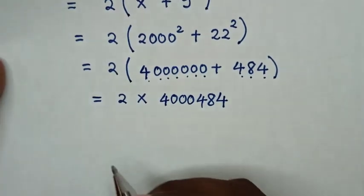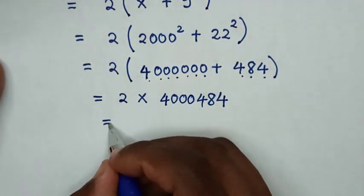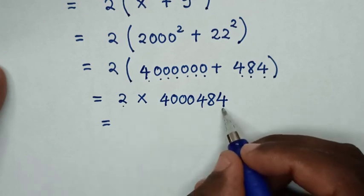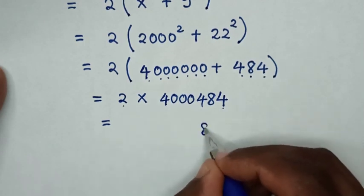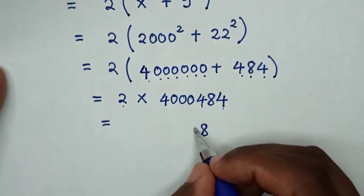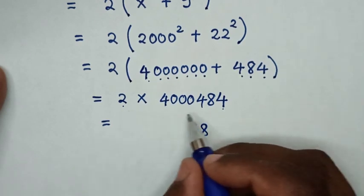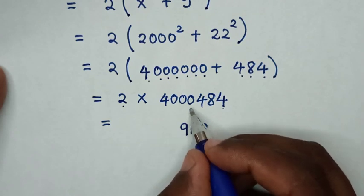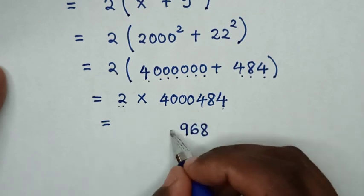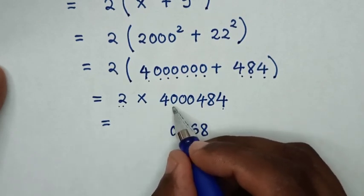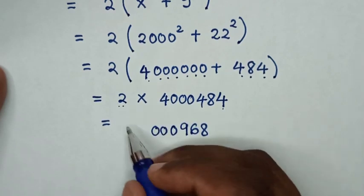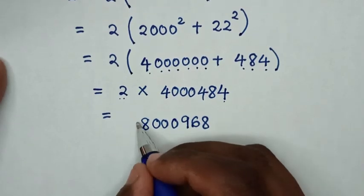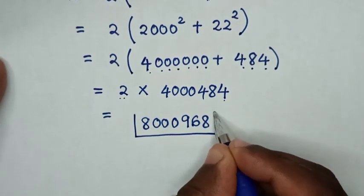Then it will be equal to 2 times 4,000,484. Multiplying: 2 times 4,000,484 gives us 8,000,968. So this is our final answer.